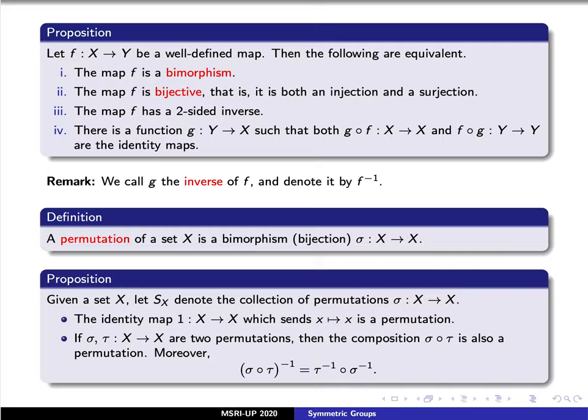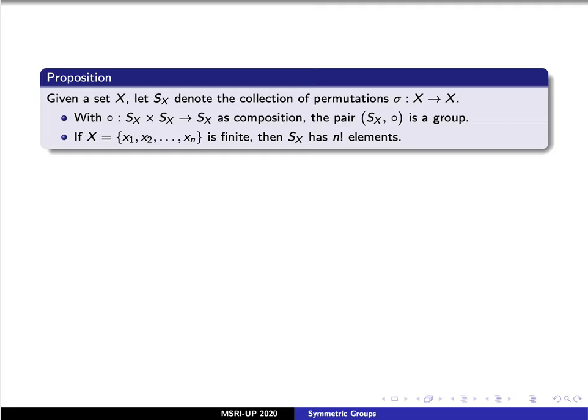Now we can use this to form a group. Let S_X denote the set of permutations from X to itself, and remember that the circle here is the composition of two functions. The statement is that the pair S_X along with composition forms a group. Moreover, if X only has a finite number of elements — say n elements — then S_X, the set of permutations, is also a finite set. In fact, it is a finite group that has n factorial elements.